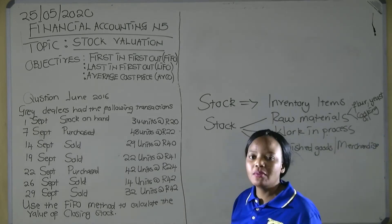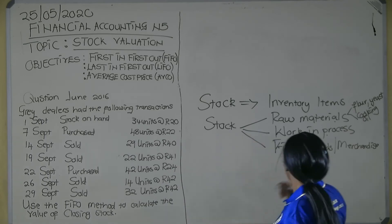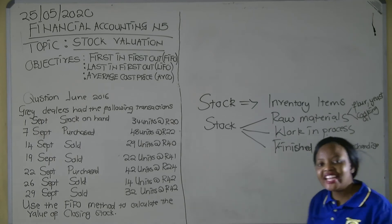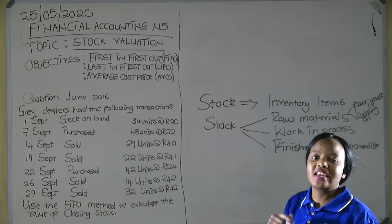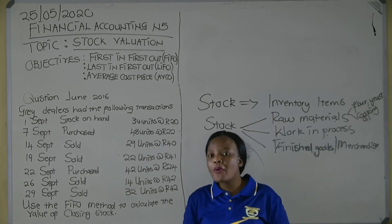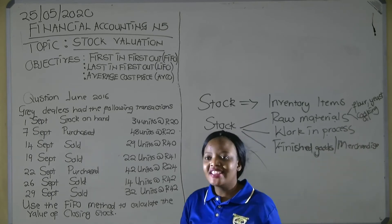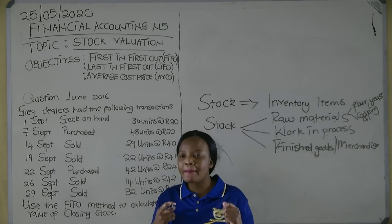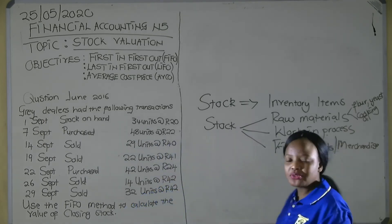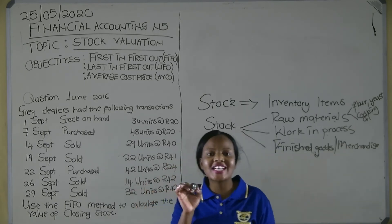In accounting we are concerned with assigning a value to inventory. When we assign a value, we are giving those inventory items a monetary value which can be recorded in our financial statements. It is pointless for a company to say they have hundreds of blankets in stock without knowing the actual value, because financial statements are expressed in monetary terms.